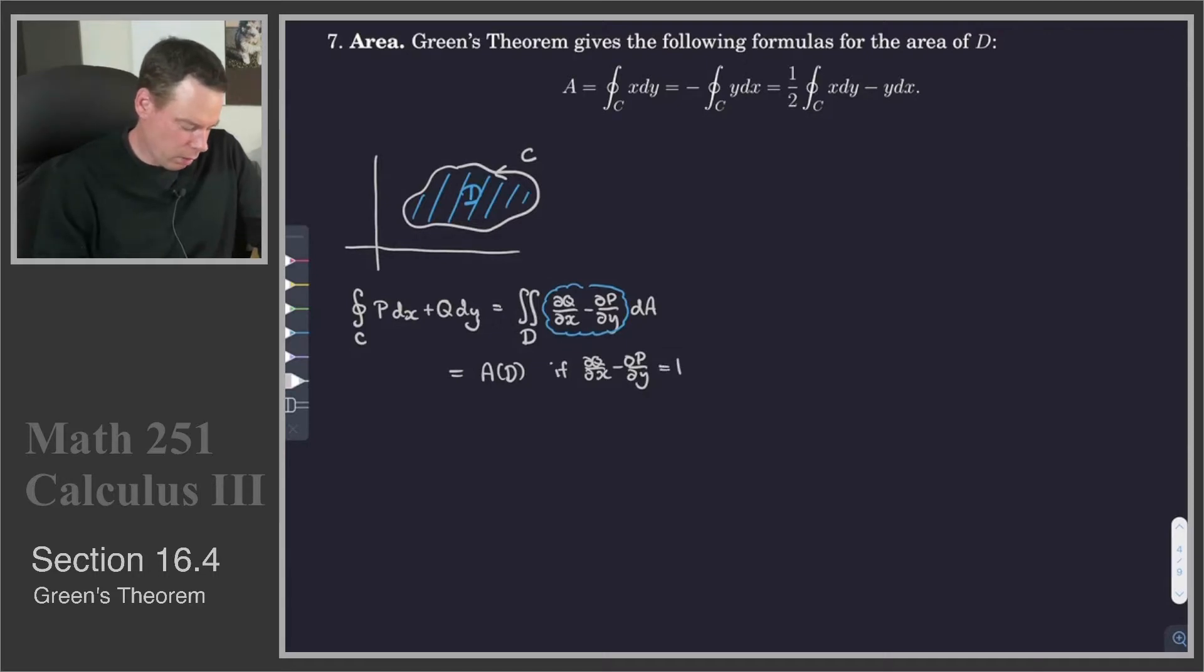And so that means we are able to express the area of a region bound by a curve in terms of a line integral for strategic choices of P and Q.